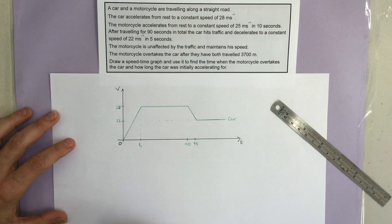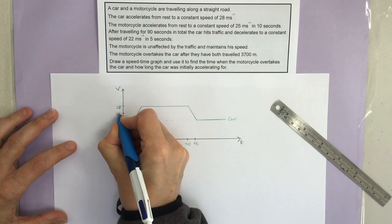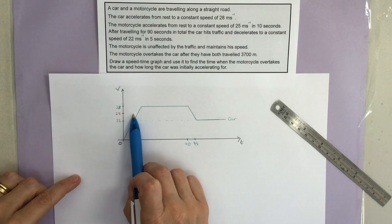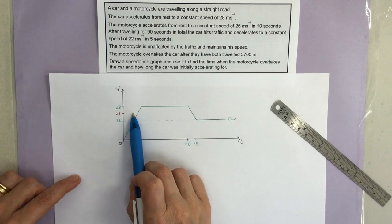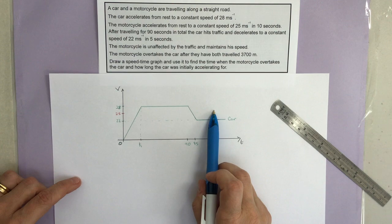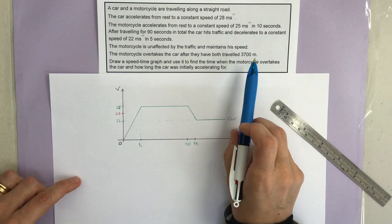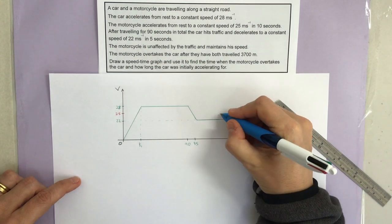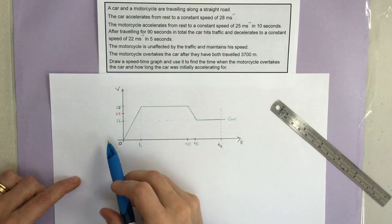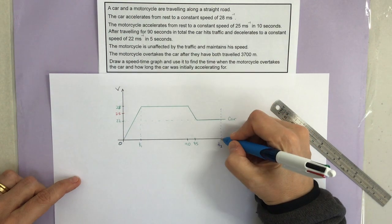Now the motorcycle: it accelerates from rest to a constant speed of 25, and that takes 10 seconds. Then it just carries on at 25 metres per second — it's not affected by the traffic lights. What I'm looking for is time T2 where the motorcycle and car have both travelled the same distance, and then the motorcycle zooms off ahead. So that's my T2.